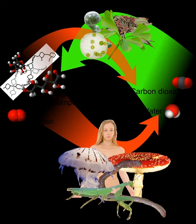An autotroph, or primary producer, is an organism that produces complex organic compounds such as carbohydrates, fats, and proteins from simple substances present in its surroundings, generally using energy from light (photosynthesis) or inorganic chemical reactions (chemosynthesis). They are the producers in a food chain, such as plants on land or algae in water, in contrast to heterotrophs as consumers of autotrophs. They do not need a living source of energy or organic carbon.